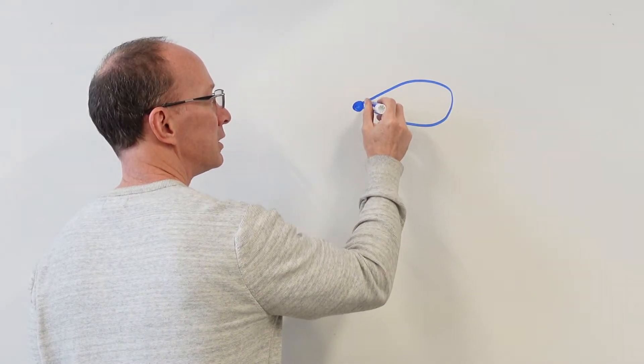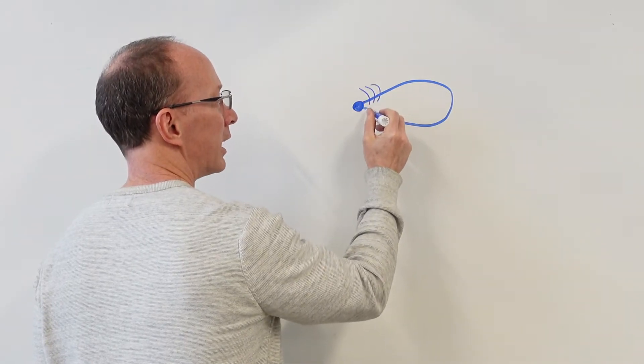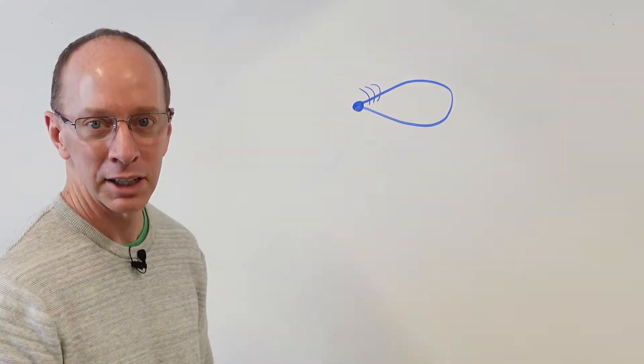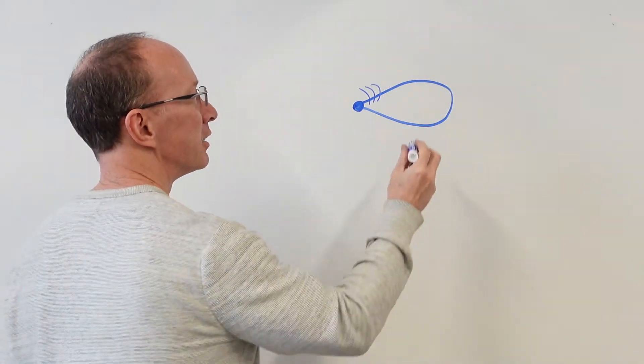And of course, some mice will have whiskers. You can add whiskers to your mice. Whiskers. And then we have to add the ears.